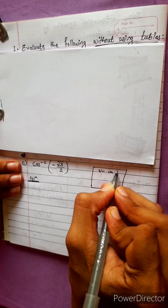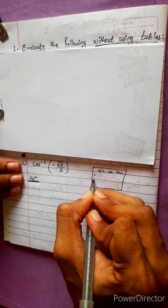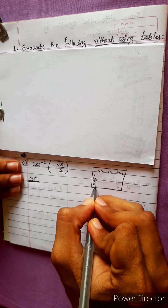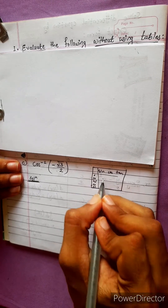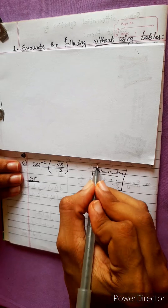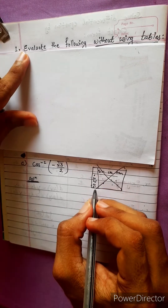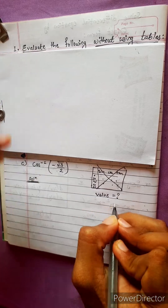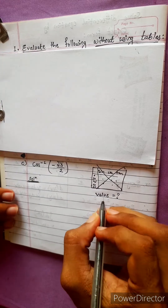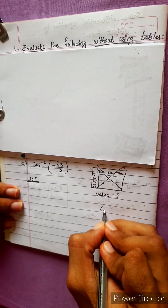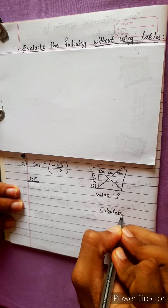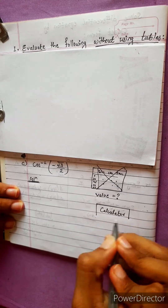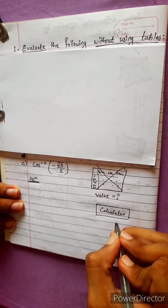We have sin, cos, tan for 0 degrees, 30 degrees, 45 degrees, 60 degrees, and 90 degrees. This table is really valuable. We have to use the table to evaluate the value — we have to use it like a calculator.